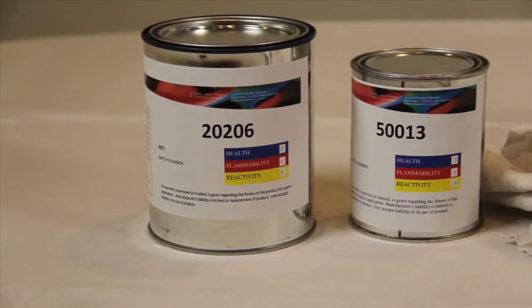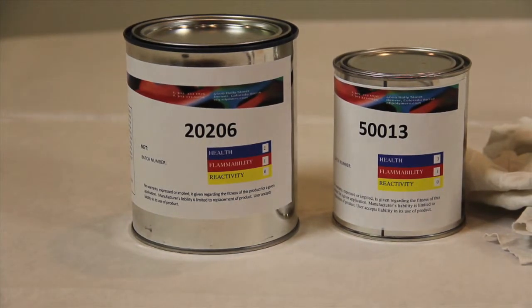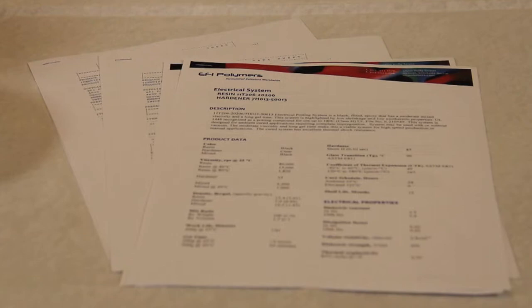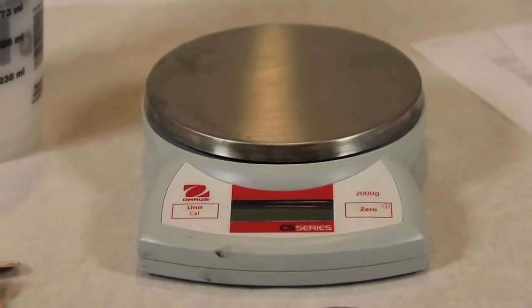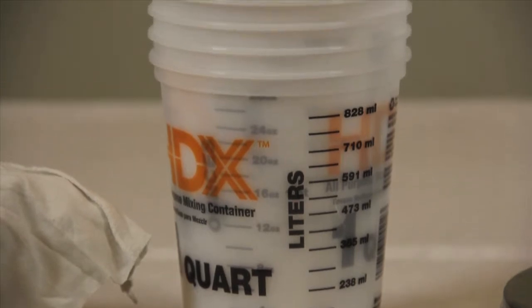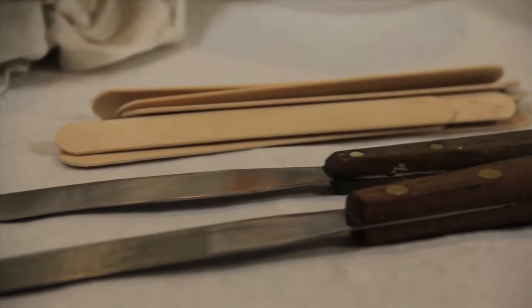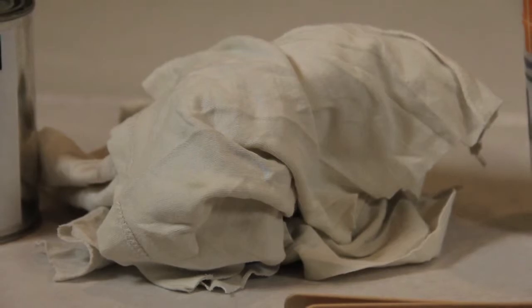The two-part epoxy or urethane system that you will be mixing, the technical data sheet and MSDS, a scale that measures in grams or ounces, at least two mixing or measuring cups, mixing sticks or spatula, and rags or paper towels for cleanup.